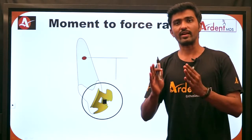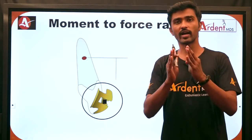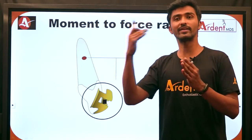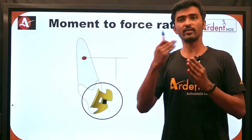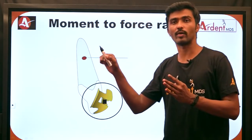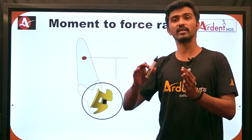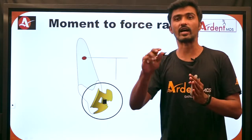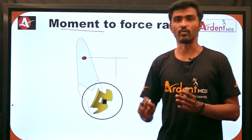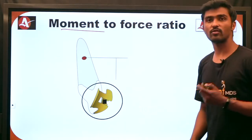In biomechanics, we have a force and we have center of resistance. We know what happens if I apply a force through the center of resistance versus if I don't. If I apply a force through the center of resistance, I will have a bodily movement or translation. If I don't, I will have a rotational tendency of the tooth — that is called the moment of the force.